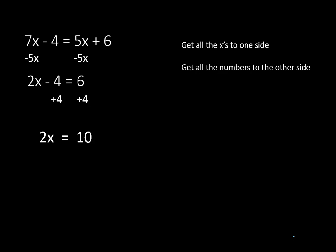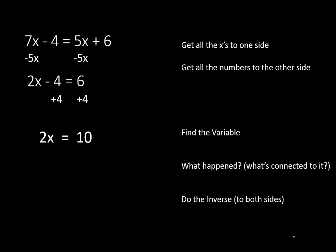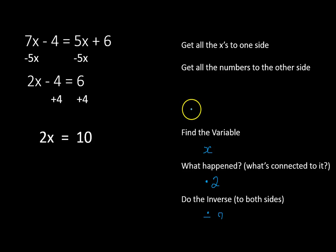You can pause the recording and look at each of those steps if you need a little more time to digest what just happened. Now we've got an equation we can solve. What's my variable? x. What happened to my variable? It got multiplied times 2. So I'm going to do the inverse, which is to divide both sides of the equation by 2. 2x divided by 2 leaves me with x, and 10 divided by 2 leaves me with 5. Dividing both sides by 2 gives me my final answer: x is equal to 5.